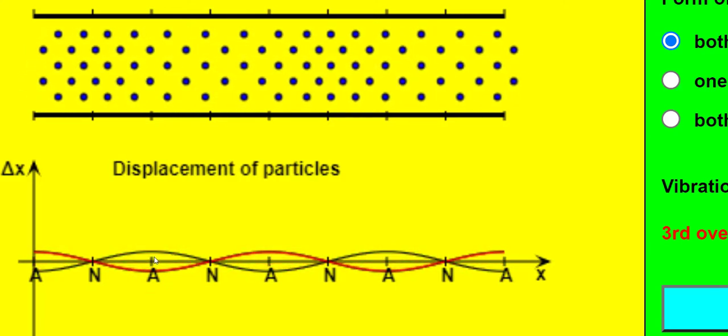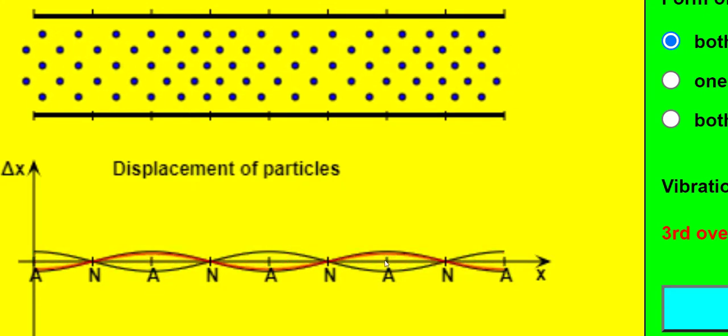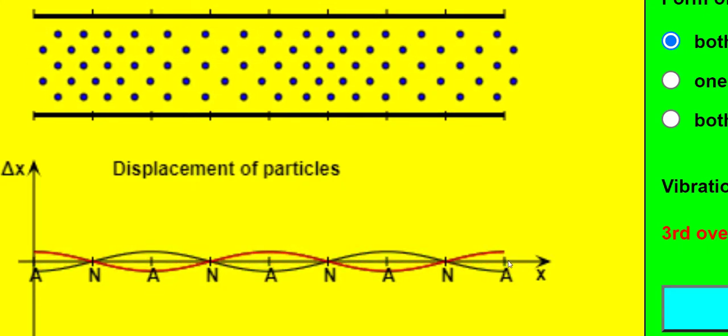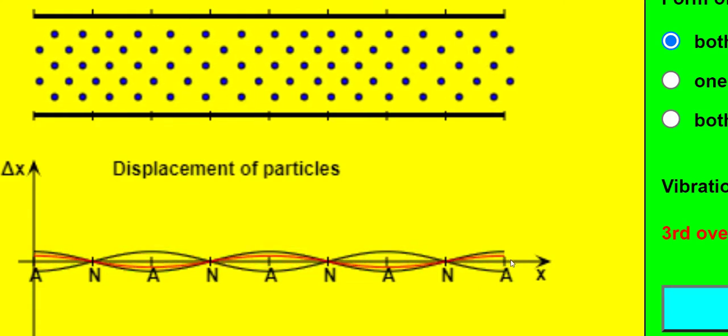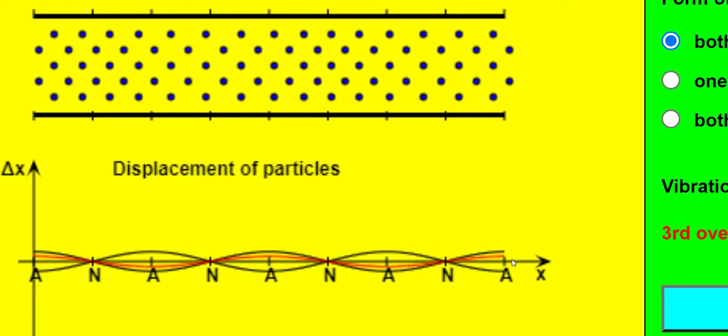So, for example, for this fourth harmonic here, we can fit in one, two, three, four half wavelengths into the length of the tube. For the fifth harmonic, we'd be able to fit in five half wavelengths into the tube and so on.